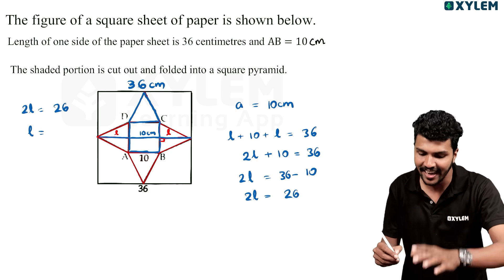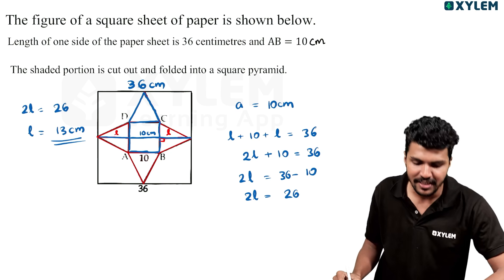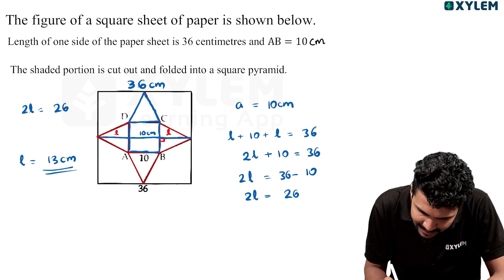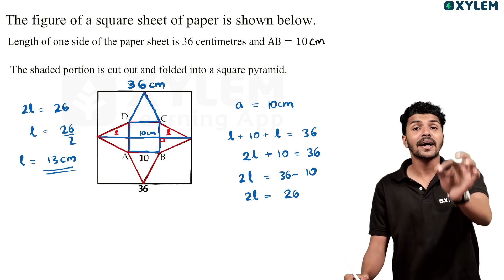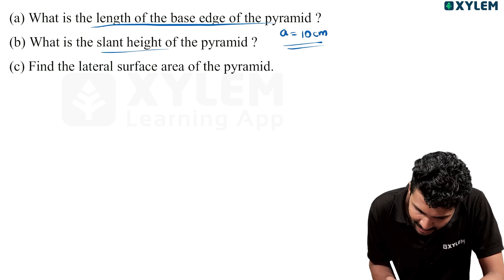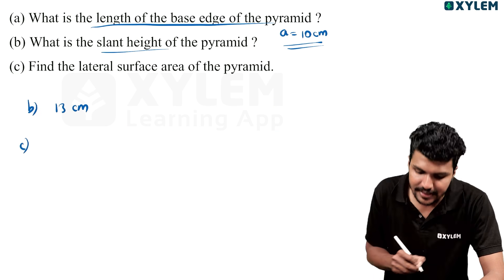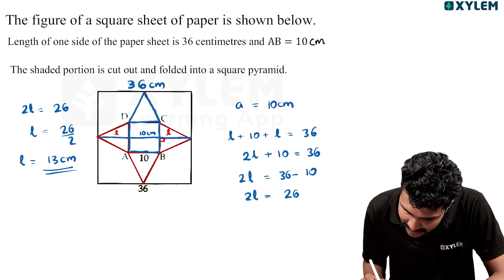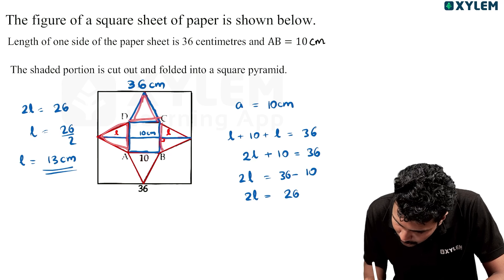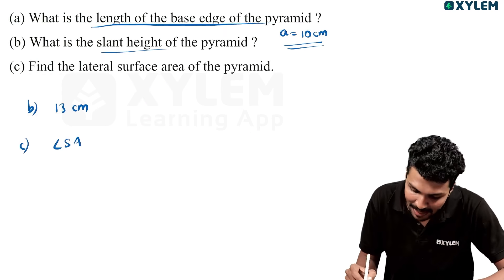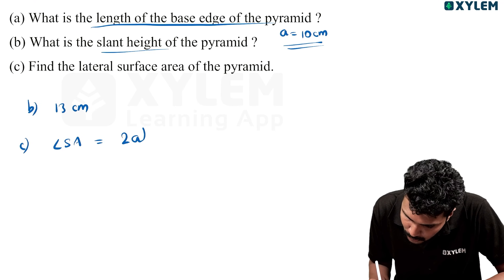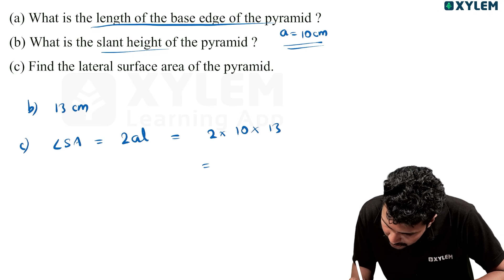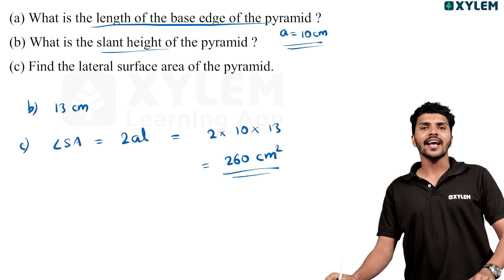So L is equal to 13. And 2 times A is equal to L, and L is 13. So 2 × 13 is 26, × 10 is 260 cm² — that is the answer.